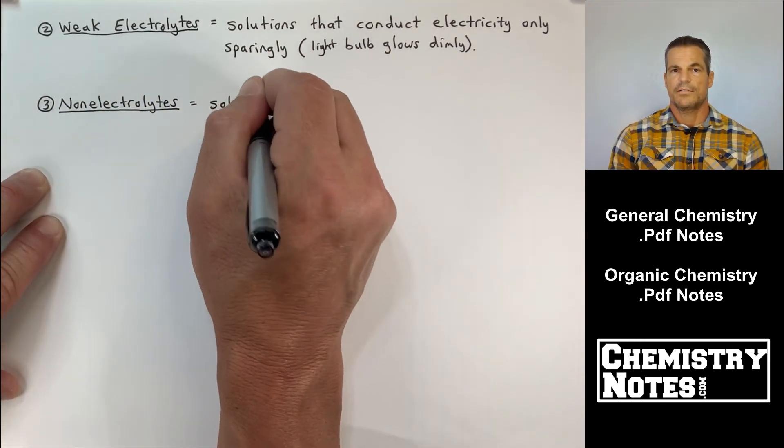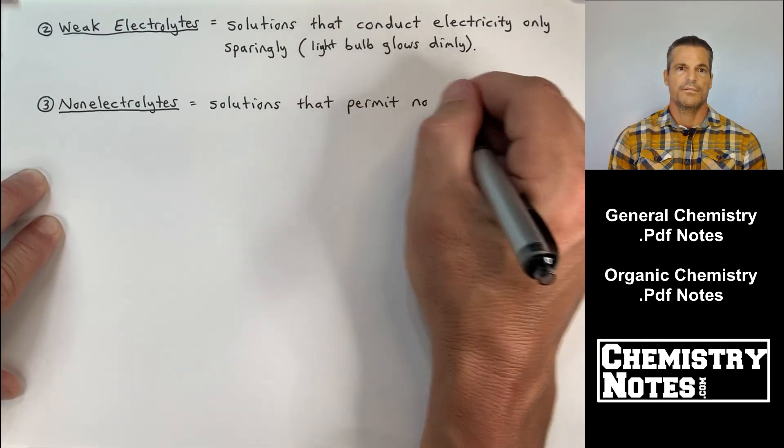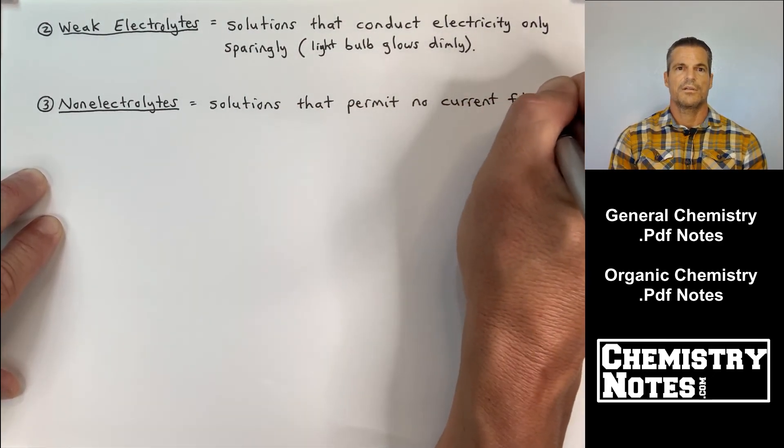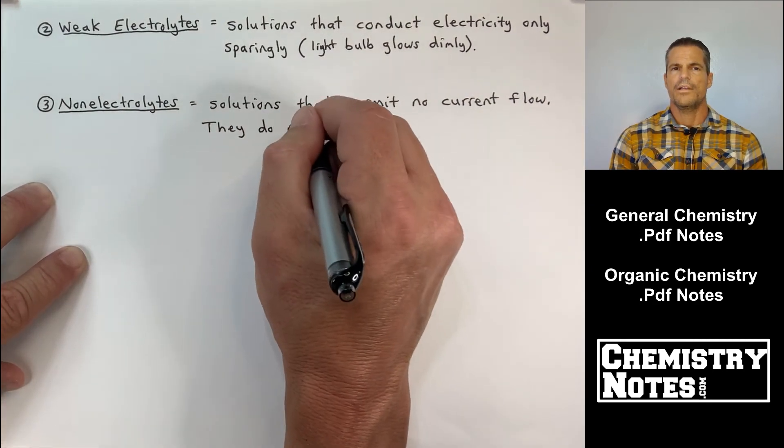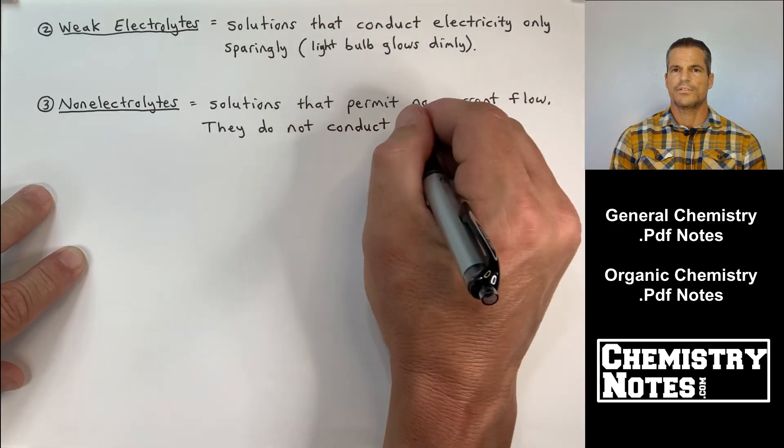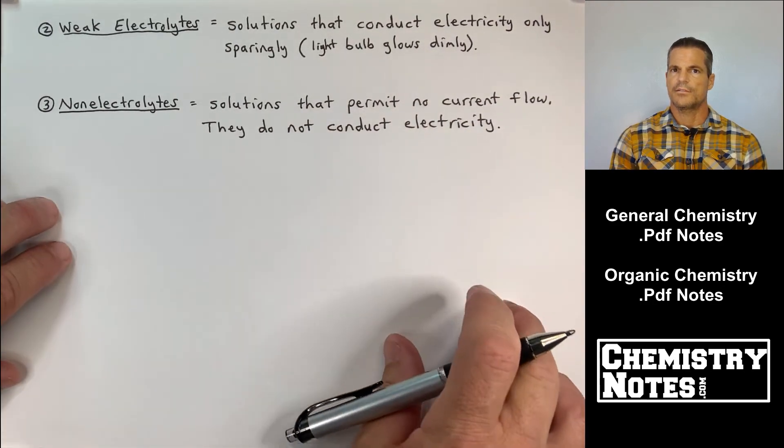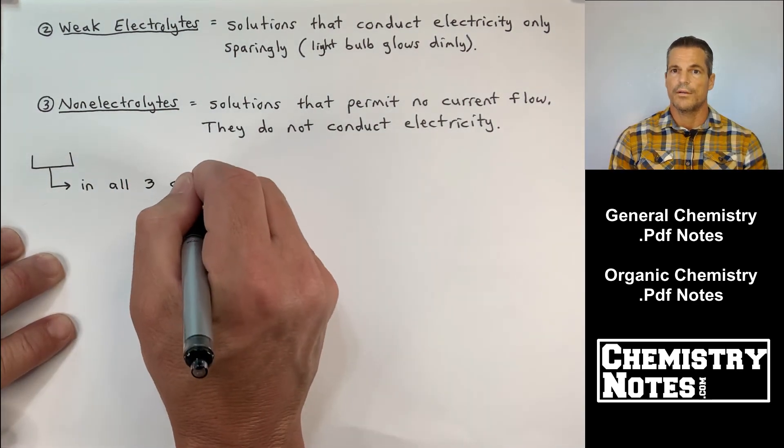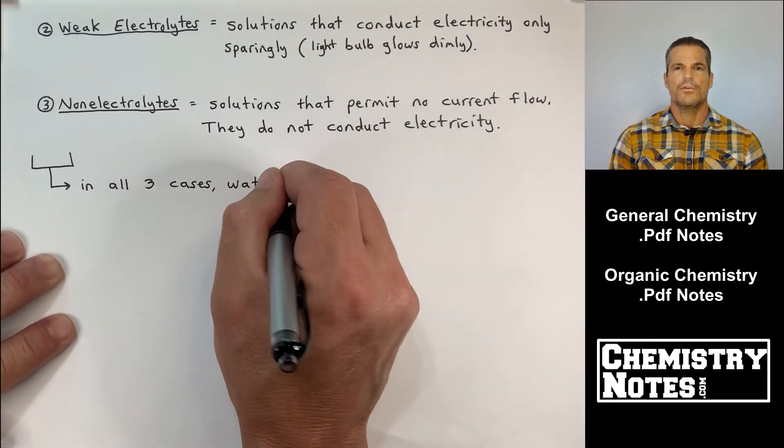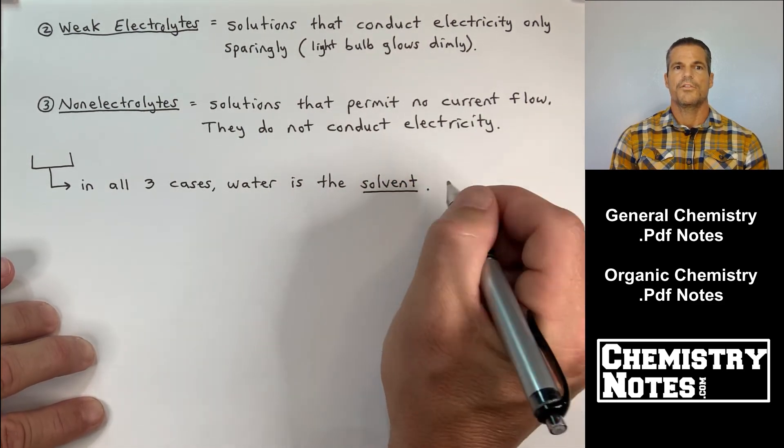And then you have non-electrolytes, number three. These are solutions that permit no current flow whatsoever. These are things like sugar solutions, they do not conduct electricity. Well in all three of those cases water was a solvent right. So it's not the solvent's problem, something must be going on with the solute here right. The solute is responsible for whether or not something is electrolytic. So in all three cases water is the solvent so electrical conductivity depends on the solute.